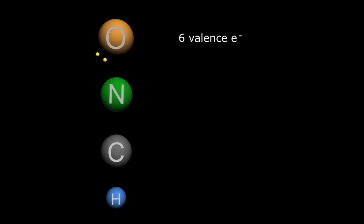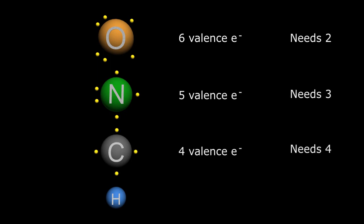As such, oxygen with its six valence electrons needs two more to be complete. Nitrogen has five valence electrons and needs three, carbon has four valence electrons and needs four more, and, finally, hydrogen has one and needs one more to resemble its noble cousin, helium.